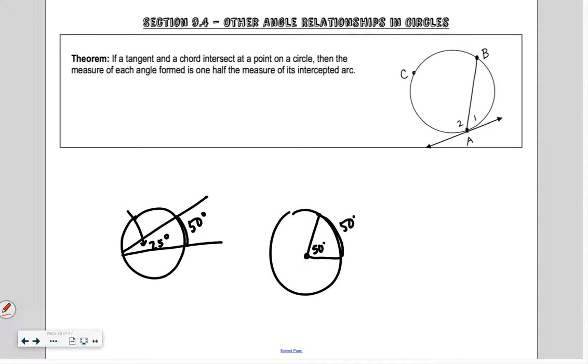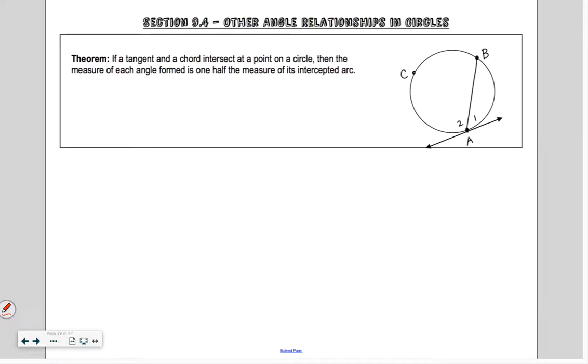So today we're going to be talking about other angles with circles. And sometimes they're kind of funny looking. So in this case, this is an inscribed angle. So angle two that we have right here is half of this intercepted arc. It's just the inscribed angle is kind of on the outside. It's part of a tangent line as well.